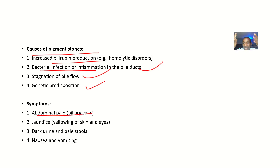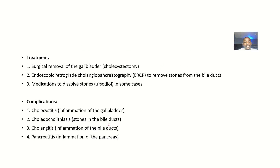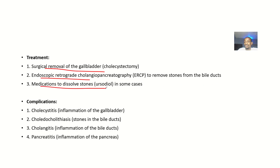The symptoms of pigment stones include abdominal pain like biliary colic, jaundice — yellowing of the skin and eyes — dark urine, pale stools, nausea, and vomiting. Treatment options include surgical removal of the gallbladder (cholecystectomy) and endoscopic retrograde cholangiopancreatography (ERCP) to remove the stones.